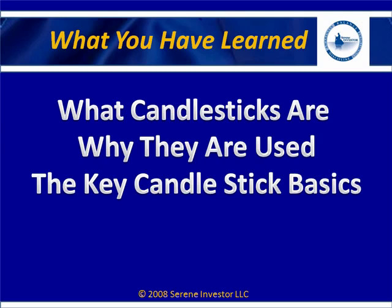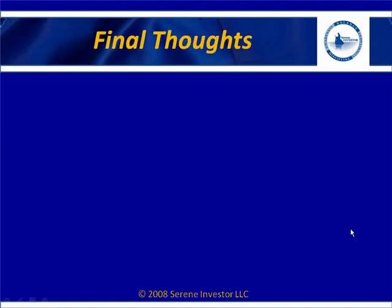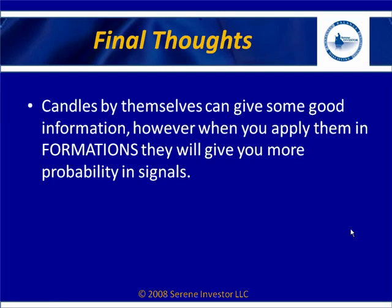This was just a basic overview into basic candlesticks. Candlesticks by themselves can give very good information, but when you apply them in formations with other candles, they will give you higher probability setups. And when you apply those setups with other information — technical trend lines, support resistance, round numbers, Fibonacci, and areas of confluence — now you're getting the highest probability and can set up your risk and trade management effectively. You don't need to know a ton about a lot of things, but you need to know a handful of things that you get very, very good at.